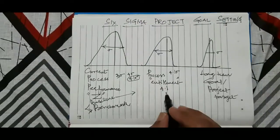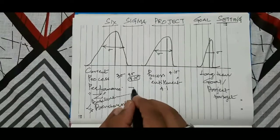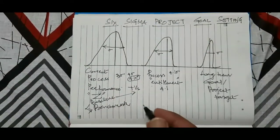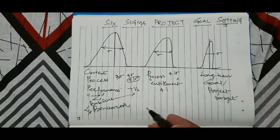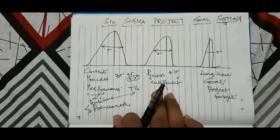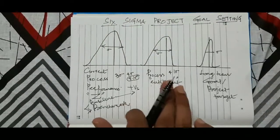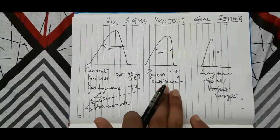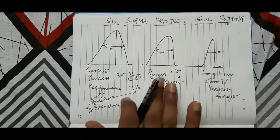From the baseline to entitlement, you can identify the positives — for example, what technological changes or process changes happened, or what low attrition contributed. Make note of these, try to sustain them, and horizontally deploy those improvements. That is the first step: achieve entitlement from your current best process.